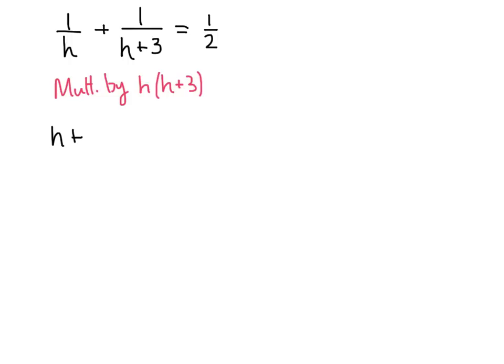When we multiply the second fraction by h times h plus three, the h plus threes divide out, and we're left with h. On the right-hand side, nothing divides out, and we get one-half times h times h plus three.